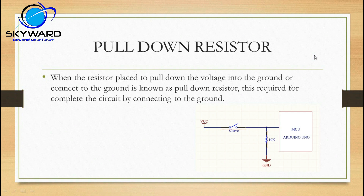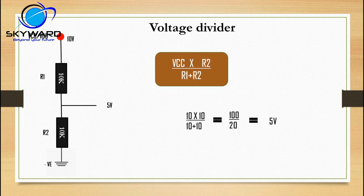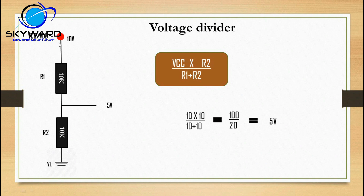Voltage divider is a very important concept. It means how to divide voltage using a resistor combination. If resistors are arranged in series with the last one connected to ground, it is a voltage divider. For example, if the input is 10 volt, to find the output voltage the formula is: Vout = Vcc × R2 / (R1 + R2), where R2 is the resistor nearest to ground.